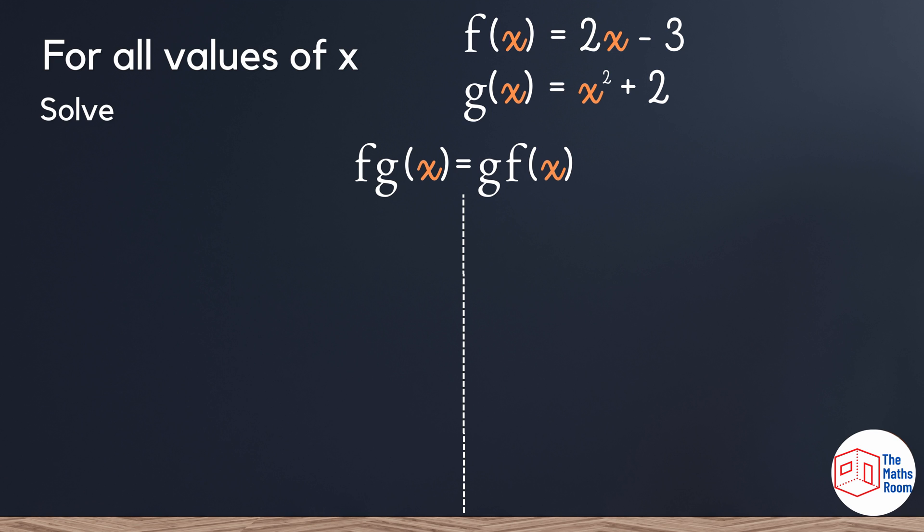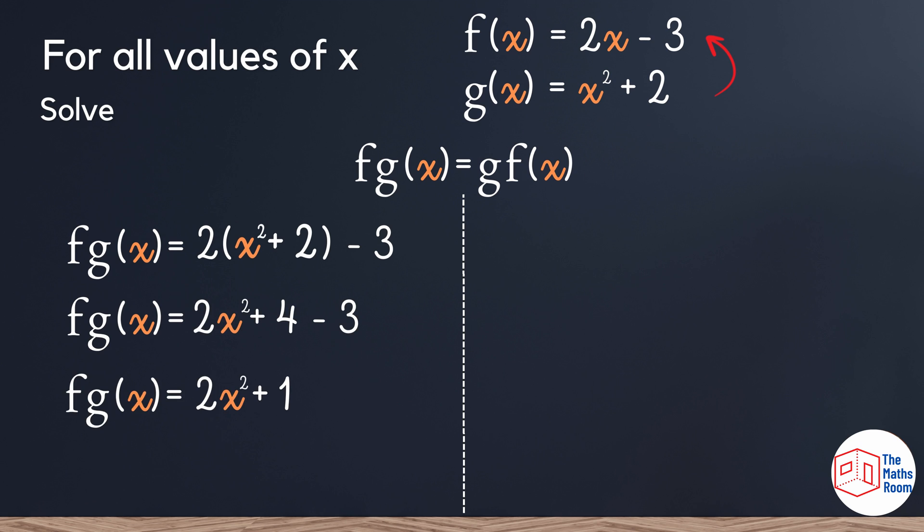We're going to work with the left first. Once again, we always work from the right to the left as we did before. So we're going to take the g of x equation and plug it into f of x. Wherever we see an x in the f of x equation, we're going to replace that with x squared plus 2. Then expanding my brackets, and simplifying and performing all my calculations, my final answer is 2x squared plus 1.